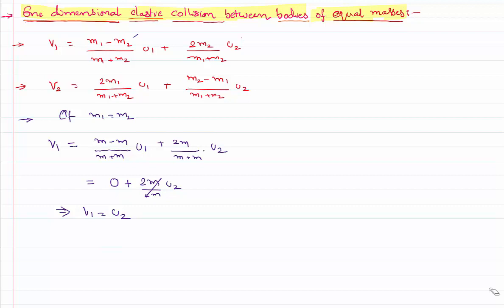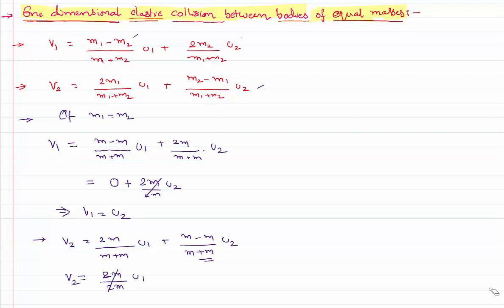Similarly, let us write the equation for the second body. We know the equation for v2. Put the condition m1 equal to m2 in that equation. Then v2 equals 2m / (m plus m) times u1, plus (m2 minus m1) / (m plus m) times u2. The second term becomes zero because both masses are the same, and 2m / 2m cancels, so v2 is nothing but equal to u1.